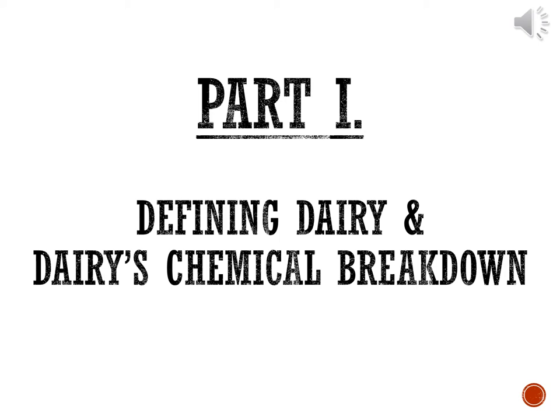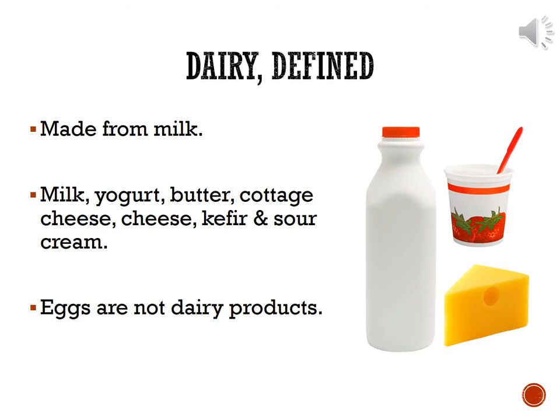The very first section is going to talk about the definition of dairy and what foods fall under the dairy classification. Very simply, dairy means that it is made from milk. Any of the following products are dairy products: milk, yogurt, butter, cottage cheese, cheese, kefir, and sour cream. To avoid any confusion, eggs are not considered dairy products.